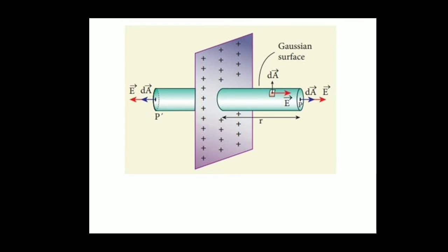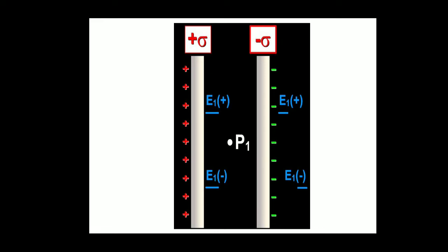The infinite plane sheet carries positive charge. The expression for electric field E is equal to sigma by 2 epsilon naught. Remember, the electric field due to the sheet is independent of distance. Distance is immaterial here, and the end cap gives the direction of the electric field vector. If it is a positive charge, the field is away from it; if it is a negative charge, it is towards the negative charge. I asked you to find the expression for electric field at point P1 due to this arrangement.